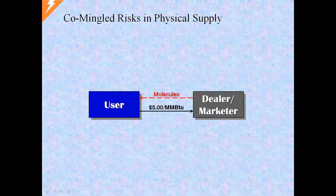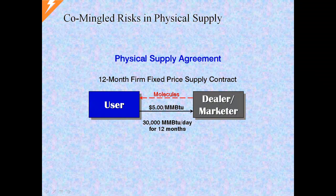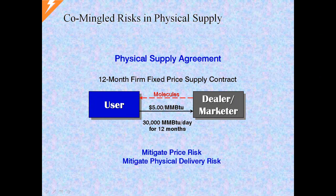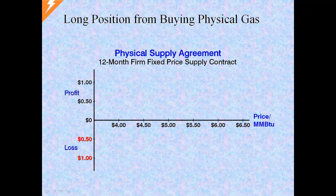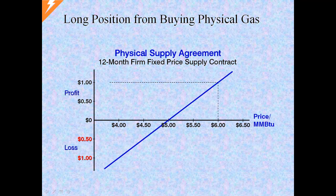Consider a consumer of gas entering into a firm physical natural gas supply contract priced at $5 on 30,000 a day for 12 months. By doing so, the user has mitigated not one but two risks. One, the fixed price supply is a long position that offsets the user's natural short position — the user has mitigated price risk. And two, the firm supply commitment mitigates physical delivery risk. The payout diagram plots the profit or loss of a risk position at varying market prices. This long position would be a symmetrical upward-sloping line with a breakeven at $5. If prices rise to $6, the user earns $1; if prices fall to $4, the user loses $1.